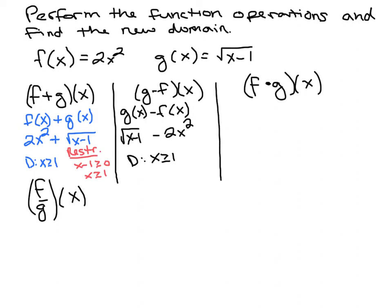f times g of x is f of x times g of x, which is 2x squared times the square root of x minus 1. I don't think we need to combine like terms or FOIL or anything. That's completely done. Now we find our new domain. We have an even root, so we know that x has to be greater than or equal to 1.